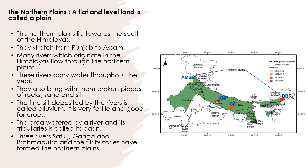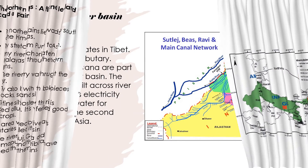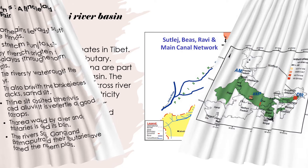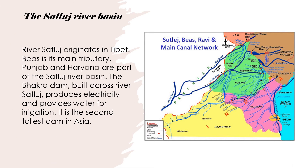Three rivers — Satlech, Ganga and Brahmaputra — and their tributaries have formed the Northern Plains. River Satlech originates in Tibet. Beas is its main tributary. Punjab and Haryana are part of the Satlech River Basin. The Bakra Dam, built across the river Satlech, produces electricity and provides water for irrigation. It is the second tallest dam in Asia.